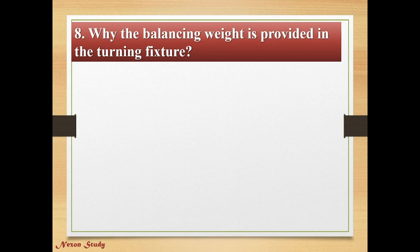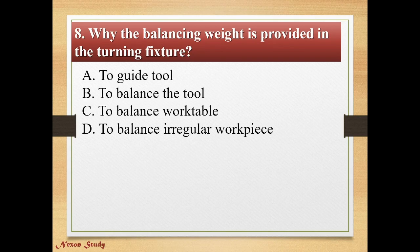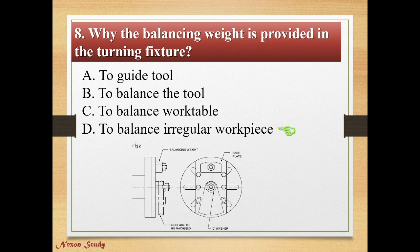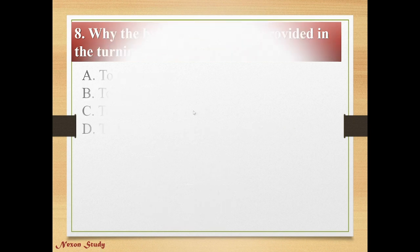Question: Why is the balancing weight provided in the turning fixture? Options: guide the tool, to balance the tool, to balance the work table, to balance the irregular workpiece. Correct answer is to balance the irregular workpiece. This is the balancing weight.